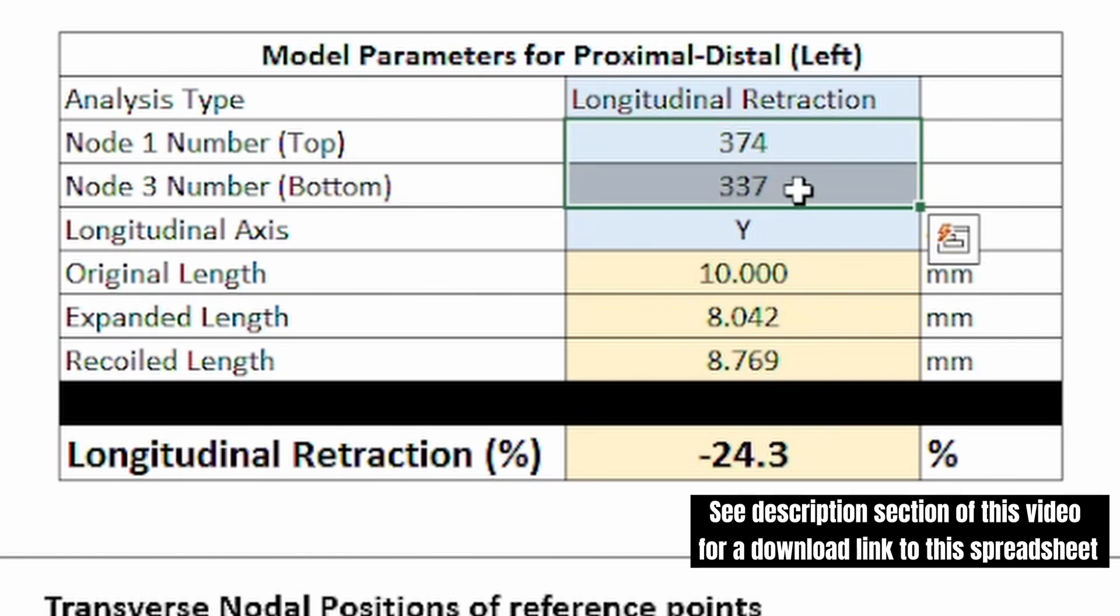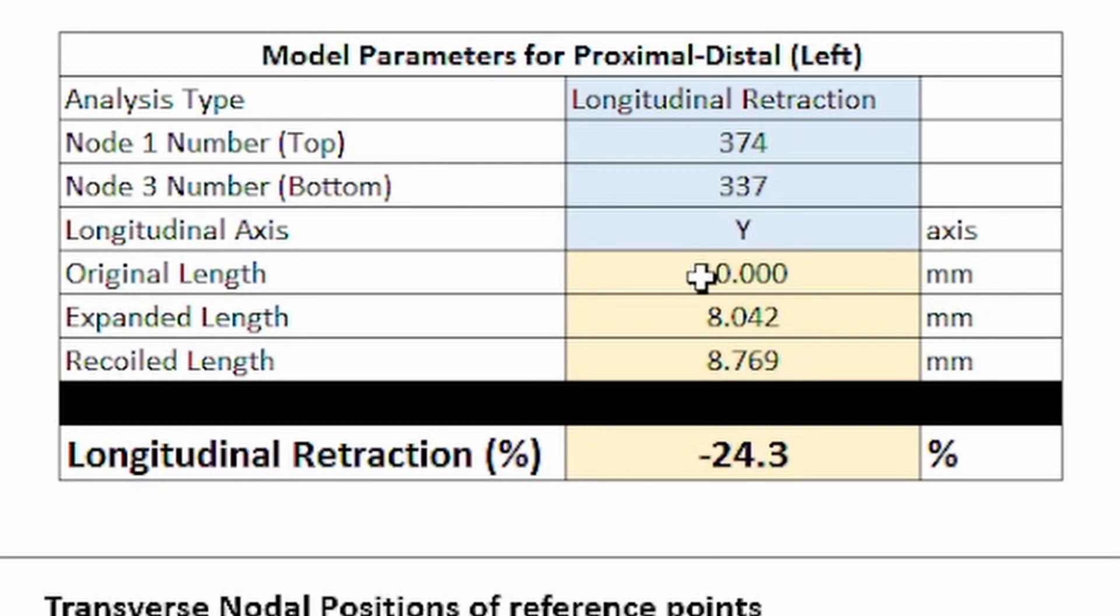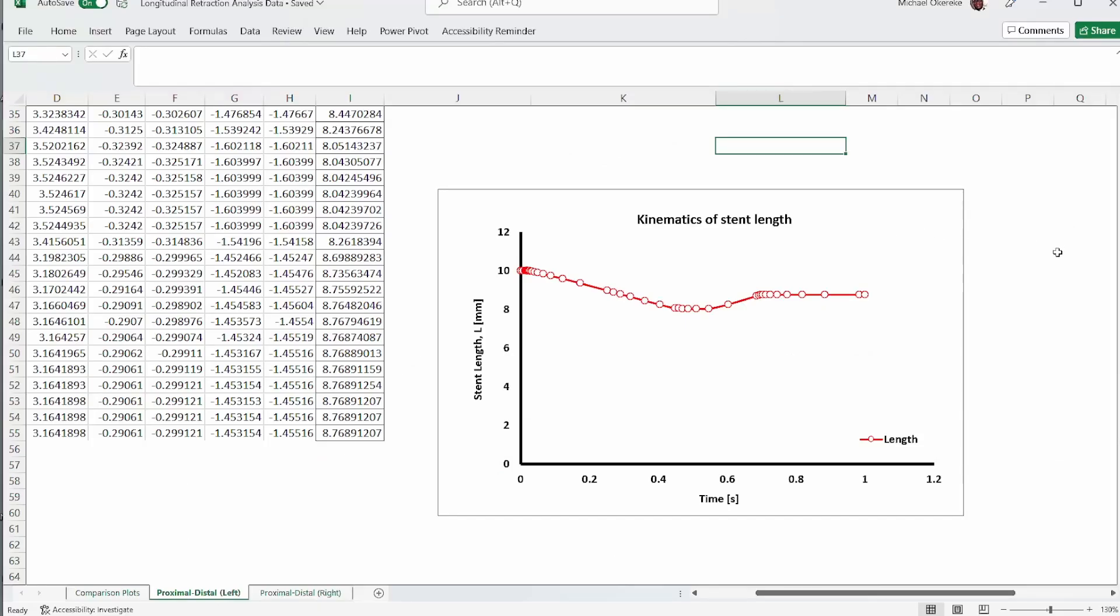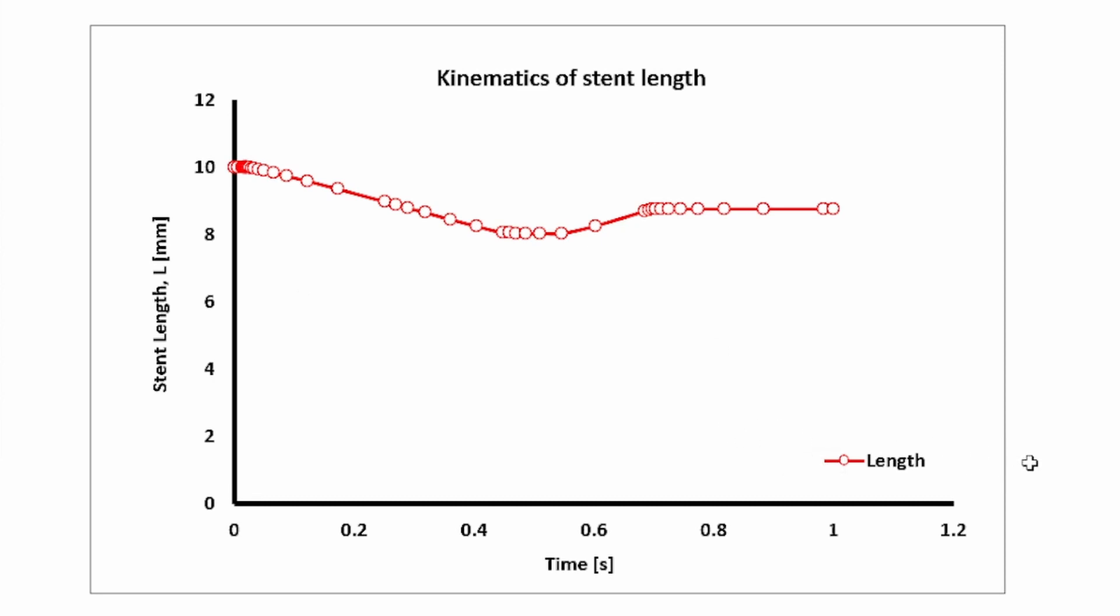Remember, these are the two nodal numbers we're looking for. So node one and node three on the left side. And the Y axis, obviously, is the direction through which the longitudinal axis is oriented. This is important because if it is a different axis, then a different combination will be required in calculating the length. Then the original length is determined. The expanded length and the record length automatically determined as well for us. And then the longitudinal retraction is also calculated. And like I said, it's a negative value because the material is contracting. This is the nodal positions that we generate from the model. And finally, the kinematics of the stent length will be what is shown here. That means how the stent is changing with time. You can see it starts with the original length of 10. It reduces to this value and then recalls back to that value. So we generate that for the first case, which is approximate of this style.